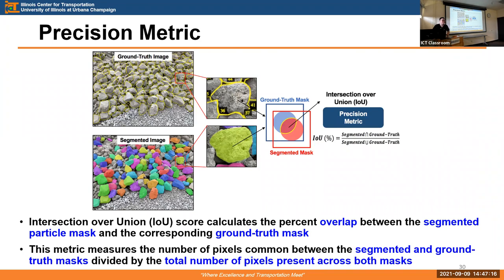Another question: when segmenting instances in a stockpile, one rock will be behind another — how do you output the correct shape and size for gradation if the rock is partially occluded? Currently, if only a small portion of a particle is visible, we label only that small portion and use it directly for size and shape analysis. In the future we plan to apply a completion network — knowing the particle is incomplete, it will predict the hidden shape. For now, we treat whatever is visible as the ground truth.